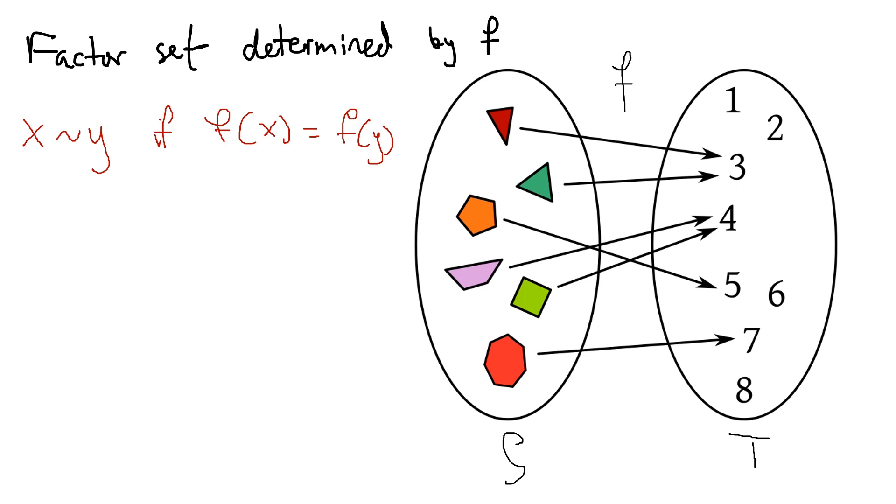And then we can say that this is actually an equivalence relationship because it's reflexive, right? x is equivalent to x because f of x is, of course, equal to itself.